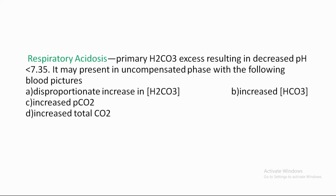Respiratory Acidosis: the primary defect is increased partial pressure of carbon dioxide. As CO2 levels rise, pH is inversely proportional and falls — causing acidosis. The compensation involves the bicarbonate levels increasing through renal bicarbonate generation in the collecting duct.